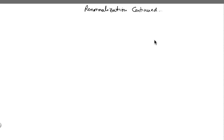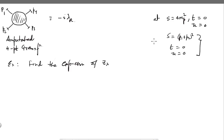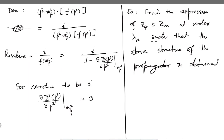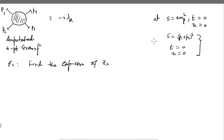Let us continue from where we left last time. We have seen so far that we can remove the divergences in Green's functions by renormalization, and there are various renormalization schemes. I have mentioned three of them: MS-bar, and also on-shell renormalization.